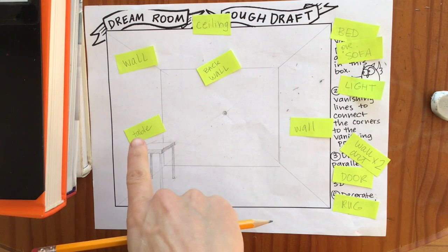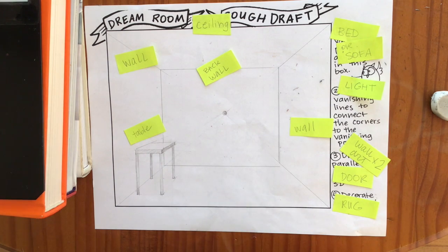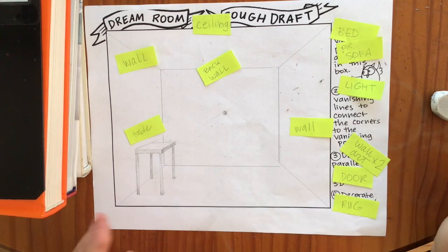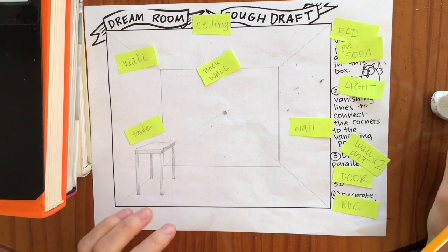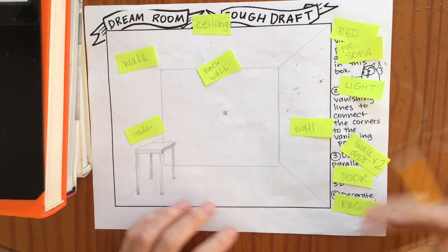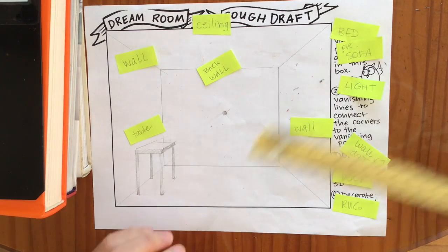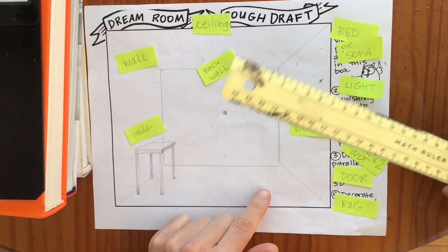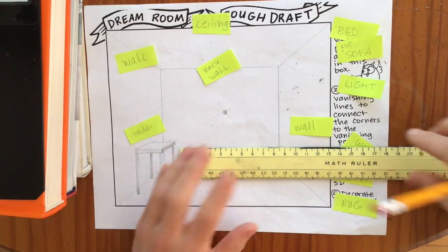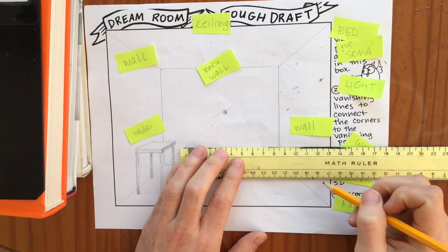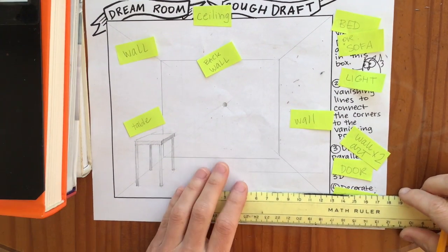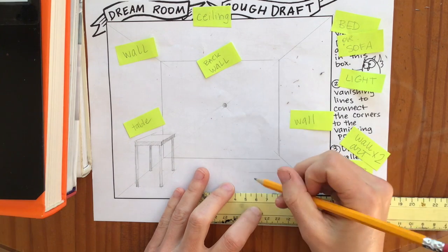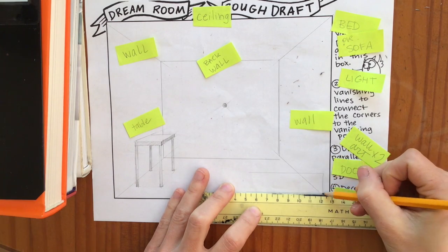Now that we have our table in the right spot, let's work on putting a bed in our dream room. So a bed is basically a giant rectangle that's 3D. The first thing I'm going to do is draw my rectangle shape and I'm going to put it in this corner here just so it doesn't take up all of the space. I'm drawing kind of a squished rectangle, kind of skinny, not as skinny as our table. I'm going to connect those.